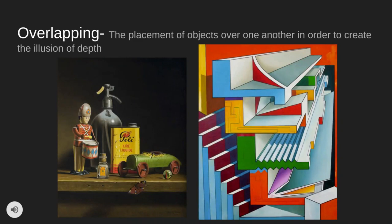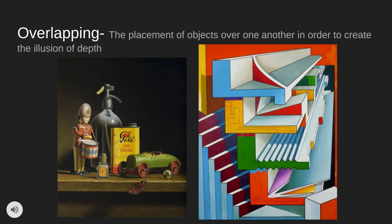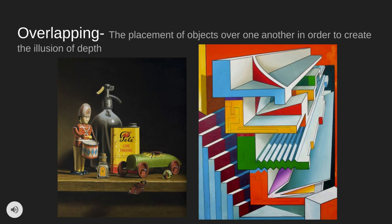The last guideline is overlapping — simply placing objects in front of other objects to give the illusion of depth. We can see in these artworks hands in front of bottles, and interesting geometric forms that go over each other to create the illusion of space and depth. So these guidelines are there to help you as you start creating your abstract composition.